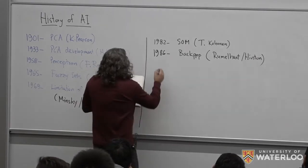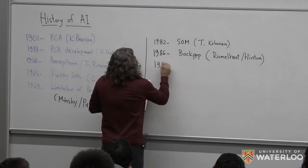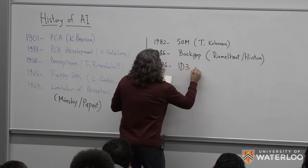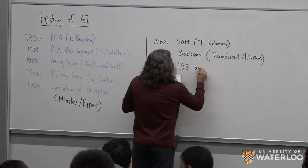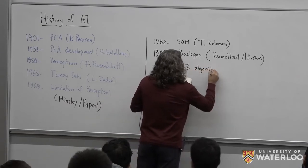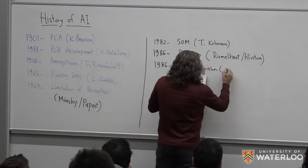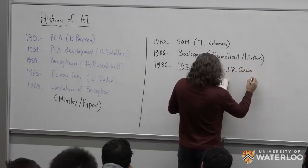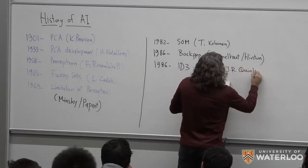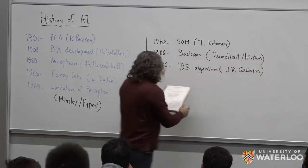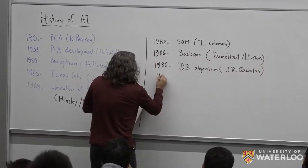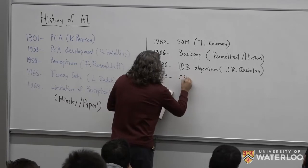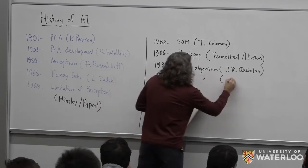Same year, 1986, we got the ID3 algorithm by J.R. Quinlan. By 1993, he also gave us the C4.5 algorithm. These are about decision trees.